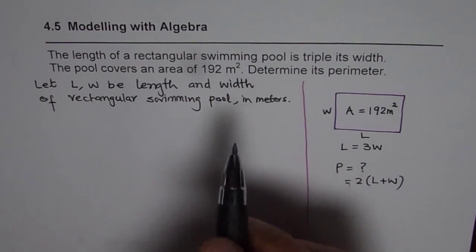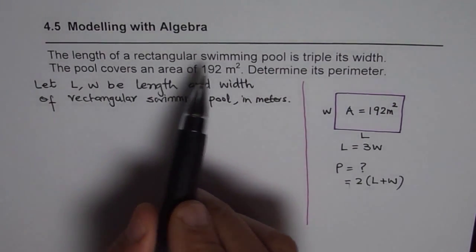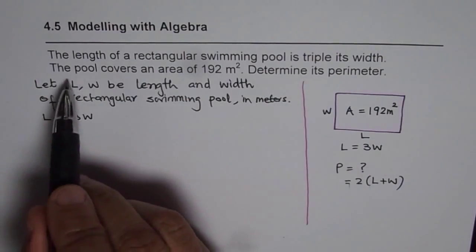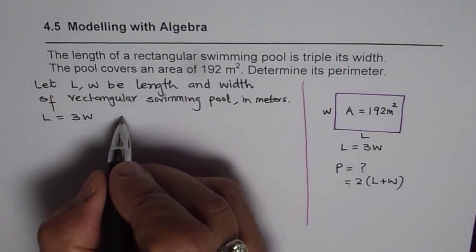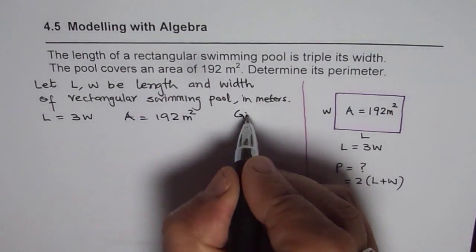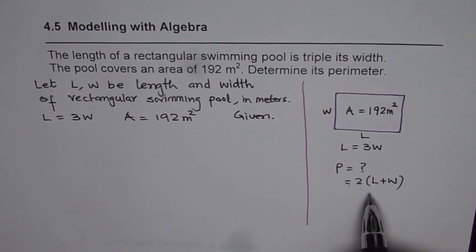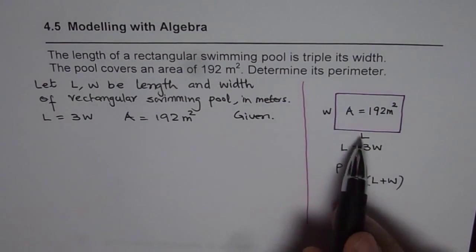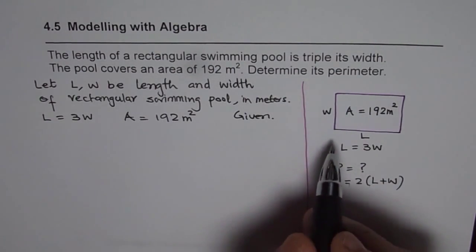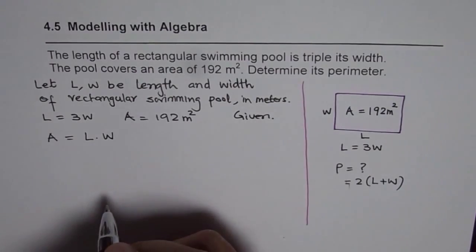Now we can develop the relations between these variables as per the given question. The first statement — the length is triple the width — gives us L = 3W. The pool covers an area of 192 square meters, so area equals 192 square meters. To find the perimeter, we first find the dimensions by relating them using the area formula: area equals length times width.